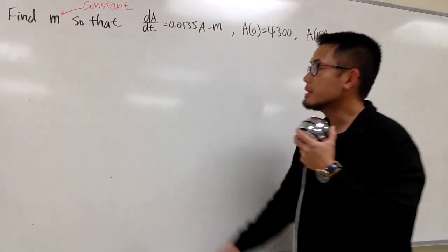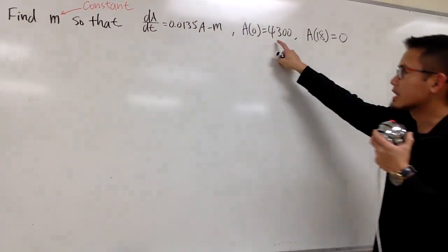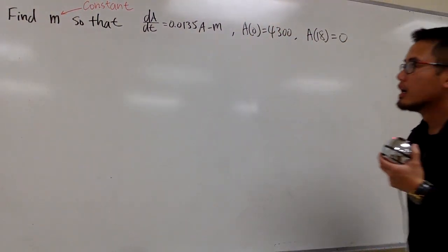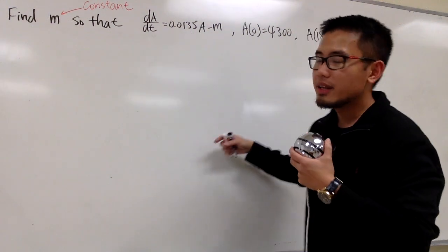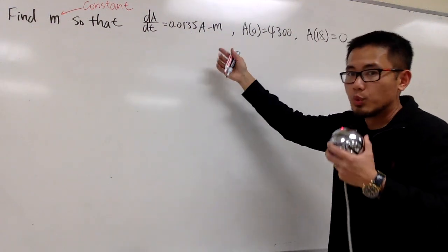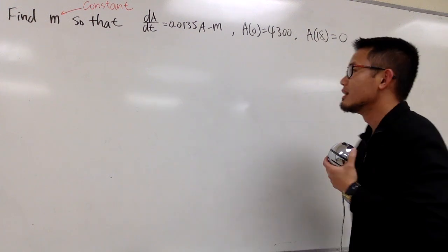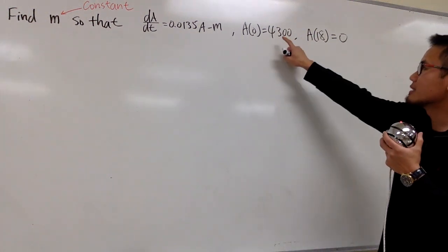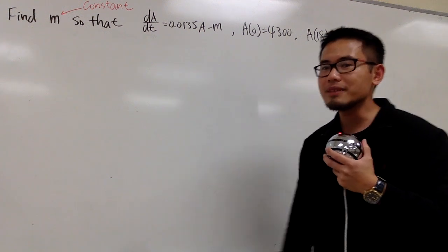We are going to find the value of M so that this differential equation will satisfy these two conditions. Let's go ahead and solve this differential equation. M is a constant, and when we solve this differential equation there's also a plus C, another constant. Therefore, we must have two conditions in order to solve for these two unknowns.